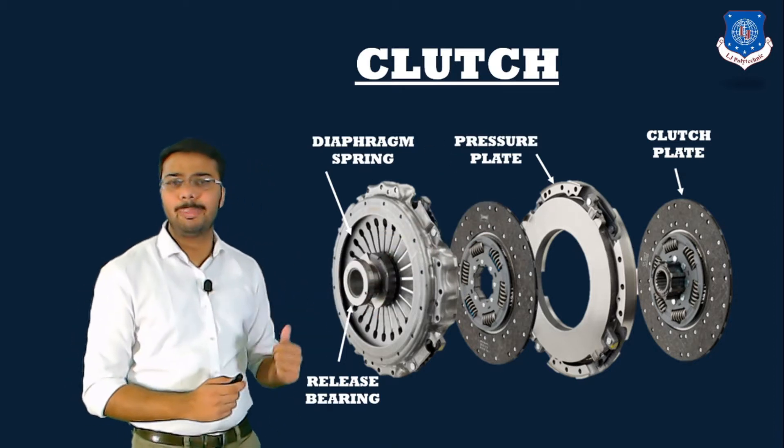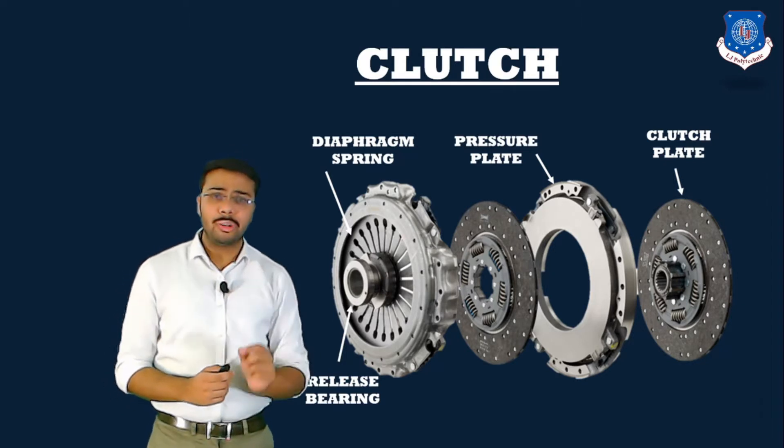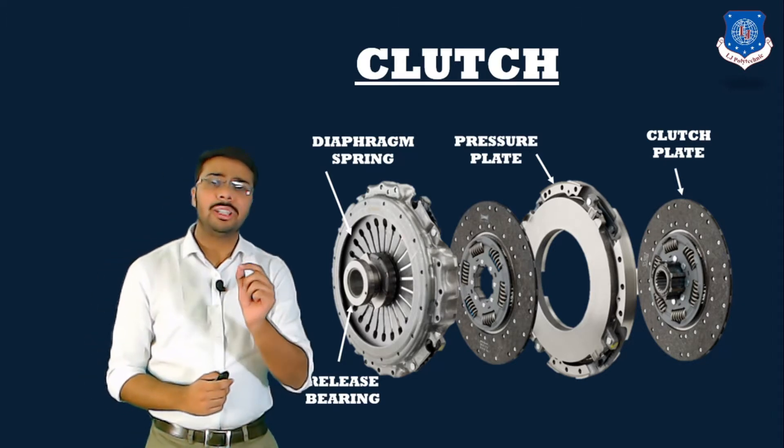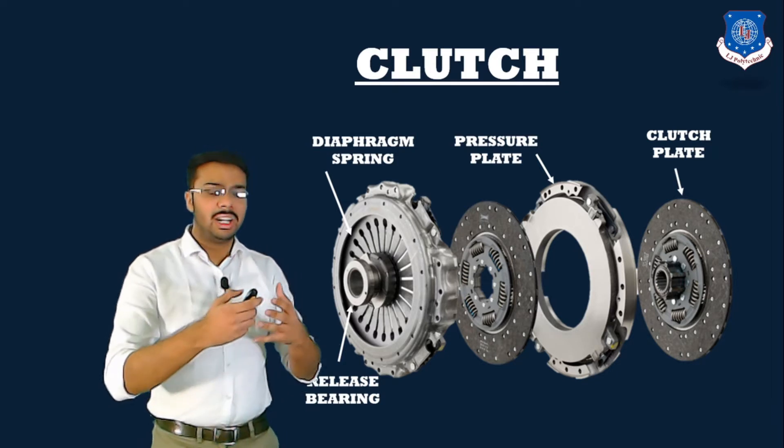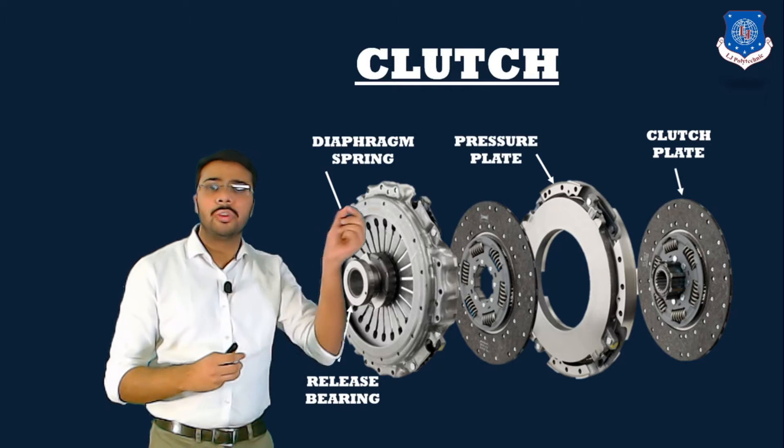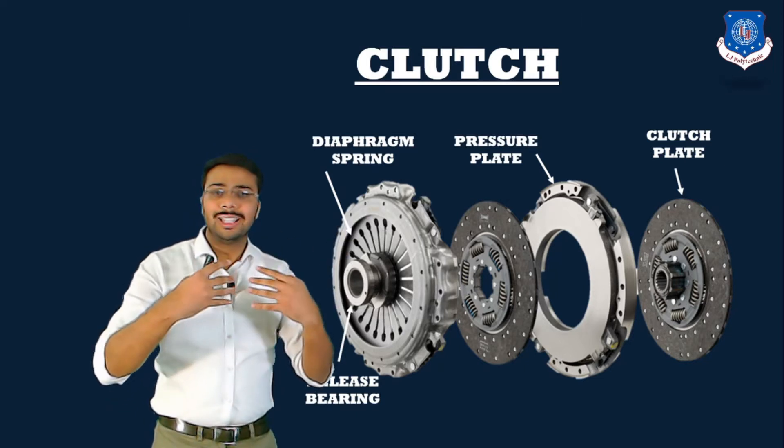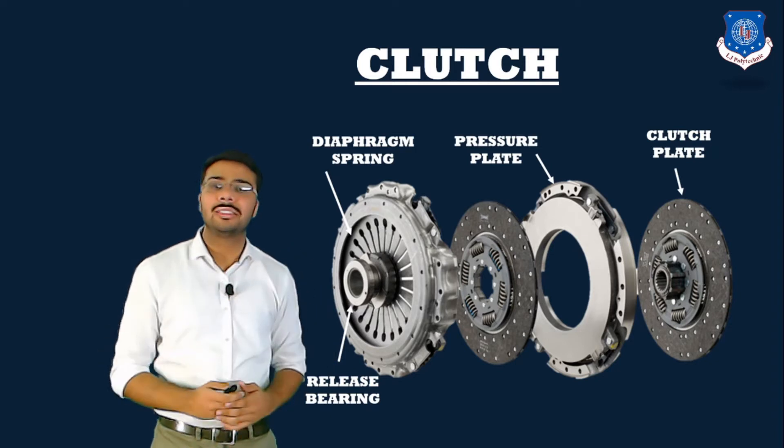The function of release bearing is to actuate the diaphragm spring. Diaphragm spring on the other hand is a bit different than conventional coil spring. It is basically a concave plate on which there are a number of slits provided so that finger-like construction is created. This finger-like construction provides the elasticity of a spring.